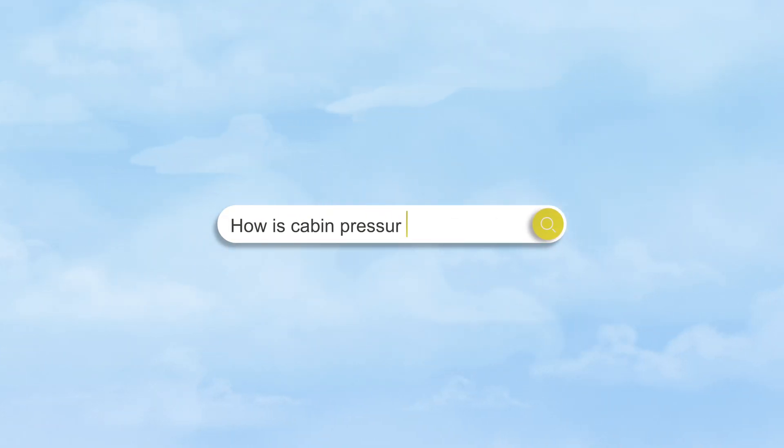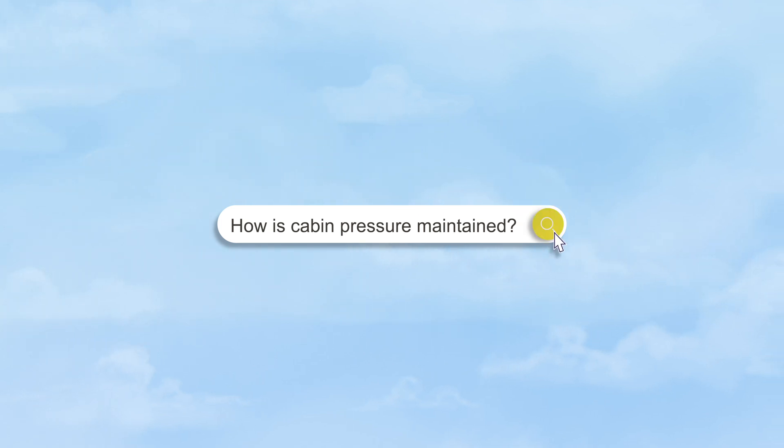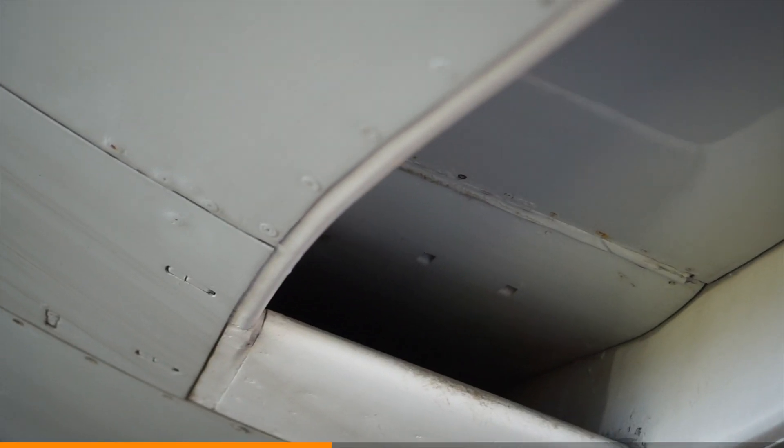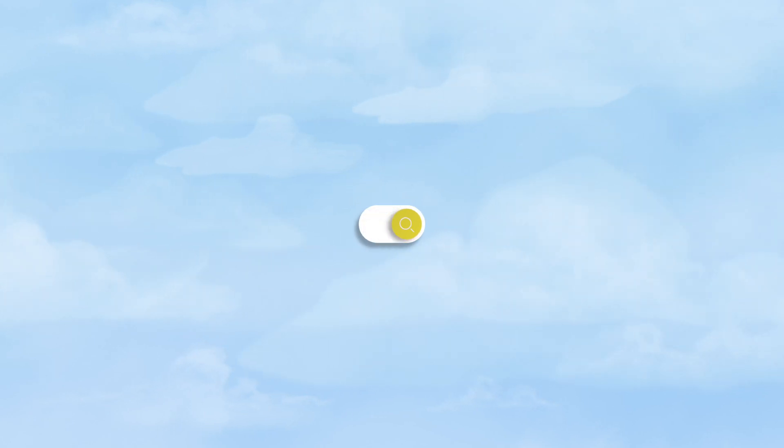How is cabin pressure maintained? Compressed air from the engines. Remember the 747 walkround — we talked about cabin pressure and the air intake ducts. The turbo jets are producing pressurized air, which becomes extremely hot, and those inlets cool the hot air down and mix it.